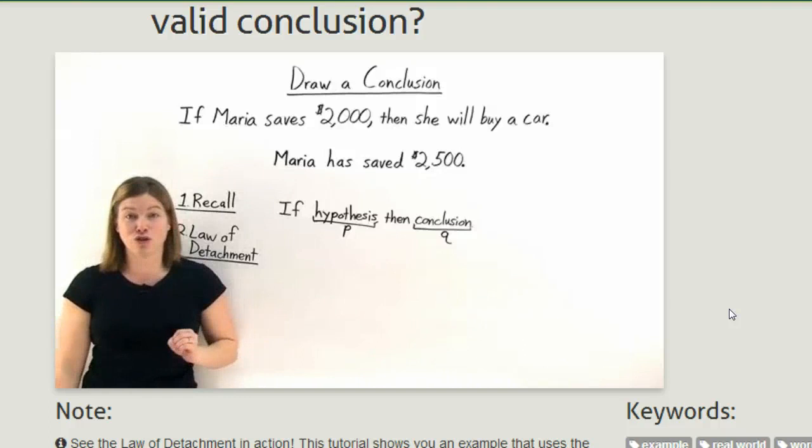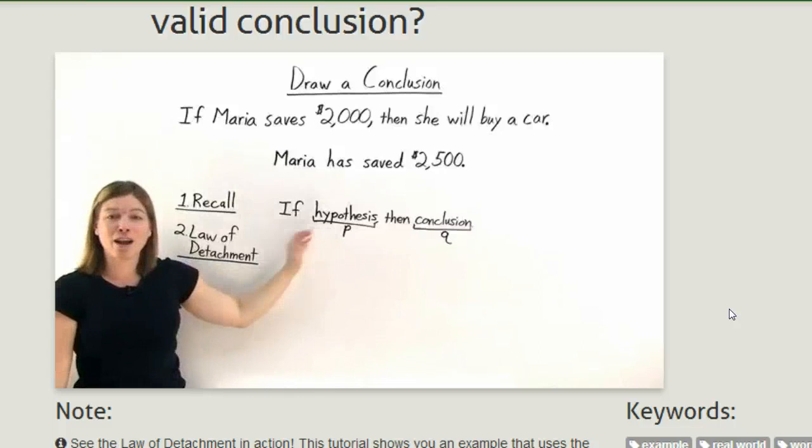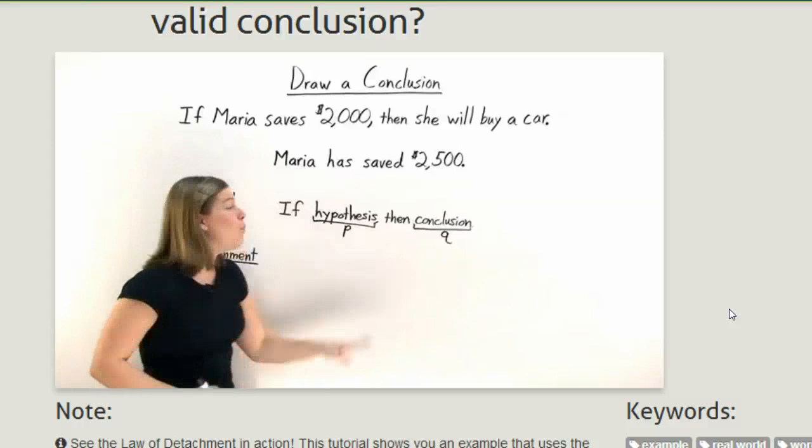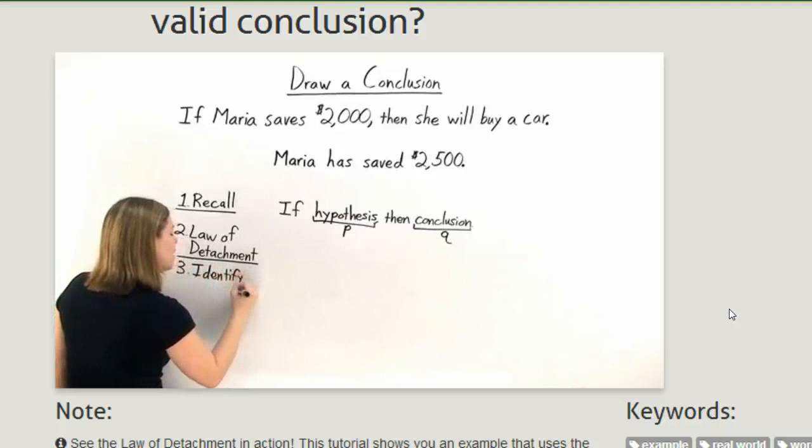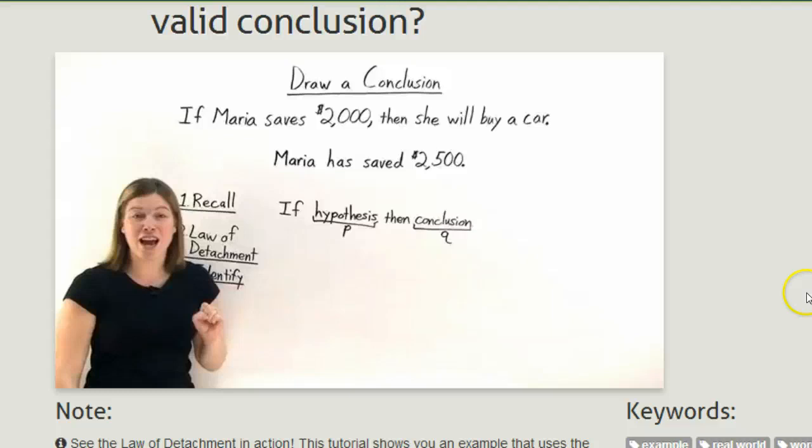So if we can just show that we're working with a true conditional statement and we have that the hypothesis is true, we will know that the conclusion is true as well. And we could state that. So that means we need to go ahead and identify the hypothesis and conclusion in our conditional statement. Then, see if that hypothesis is true. If it is, the conclusion is true as well by that law of detachment.